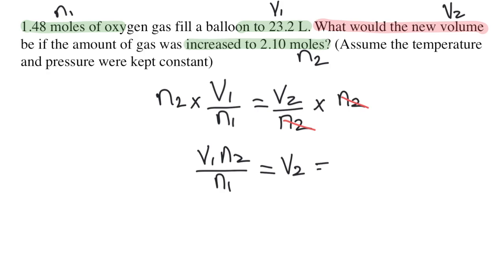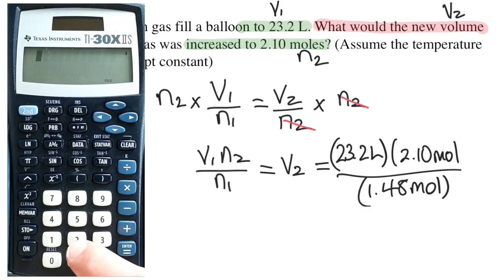Now I can plug in all the variables that I've already labeled. V1 is 23.2 liters. N2 is 2.10 moles. And N1 is 1.48 moles.